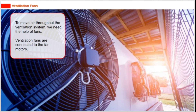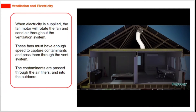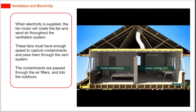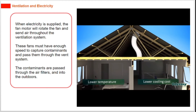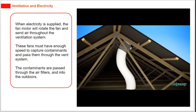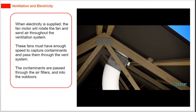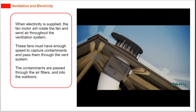To move air throughout the ventilation system, we need the help of fans. Ventilation fans are connected to the fan motors. When electricity is supplied, the fan motor will rotate the fan and send air throughout the ventilation system. These fans must have enough speed to capture contaminants and pass them through the vent system.